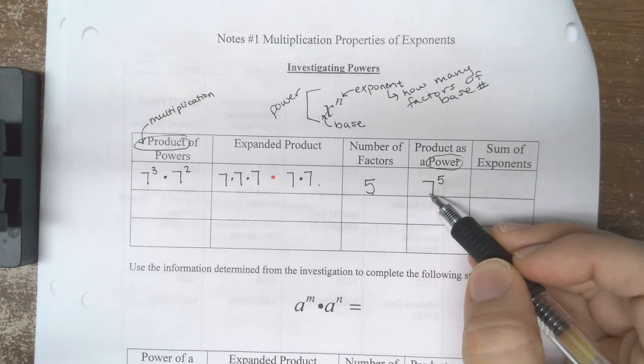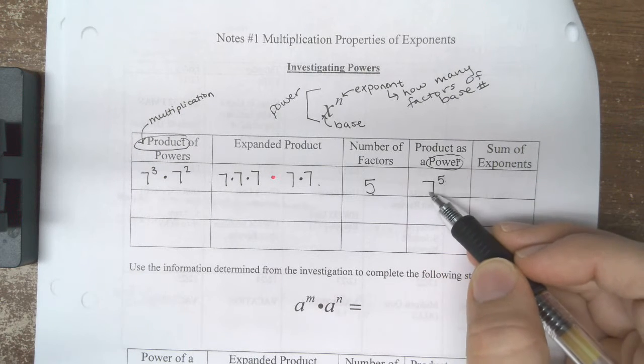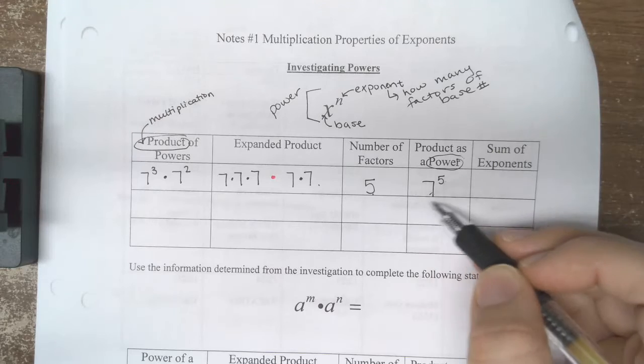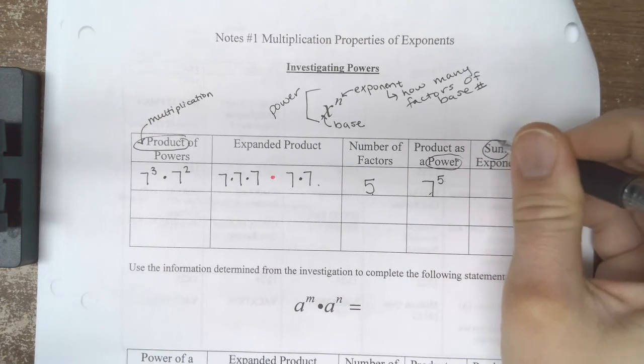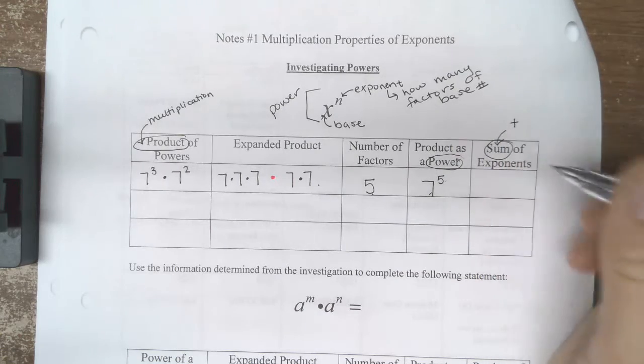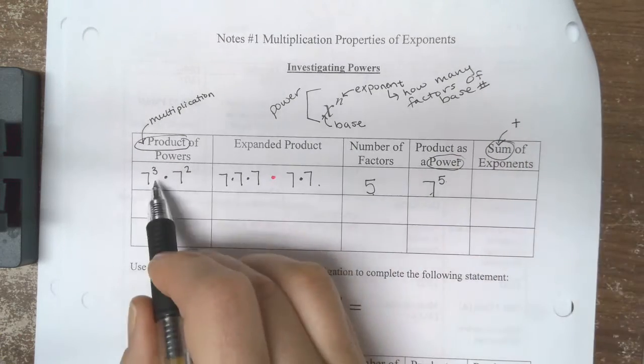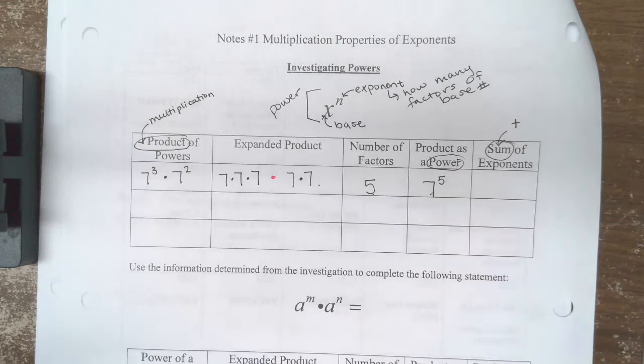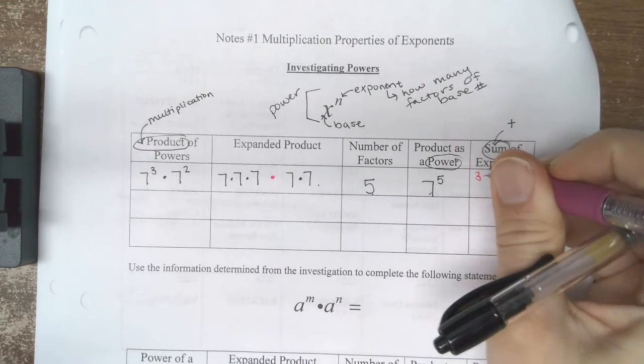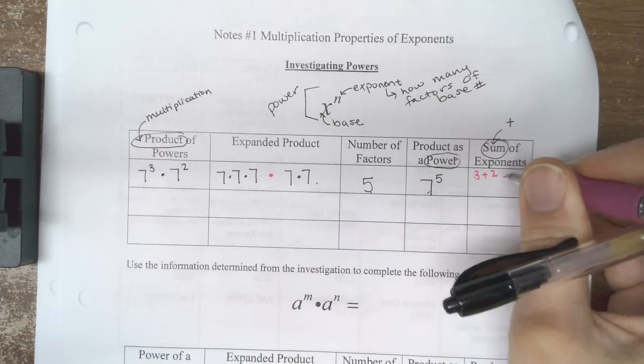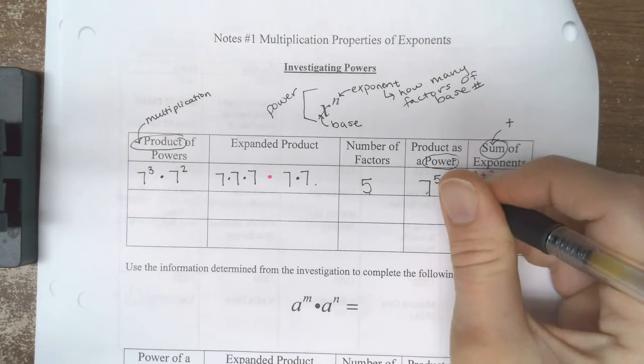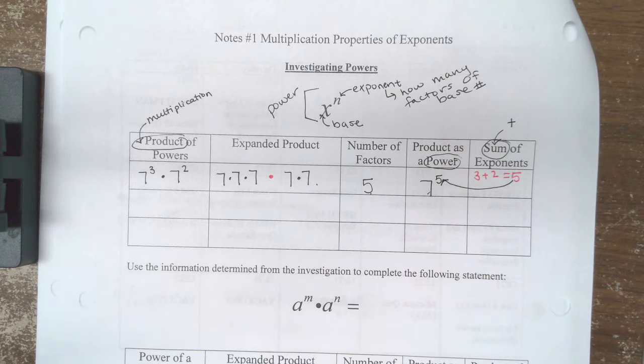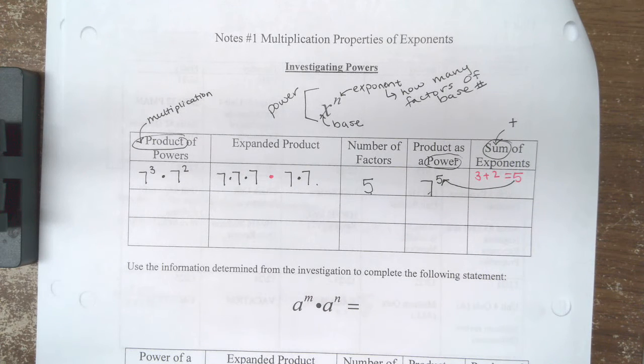If I know that expanding this gives me five factors of 7, then I could rewrite this as a power again by writing 7 to the fifth. Also notice that the sum, and remember sum means addition, of our exponents, if I do 3 plus 2, equals 5, which happens to be what my product as a power looks like.